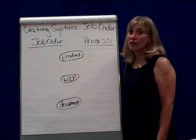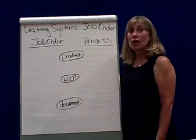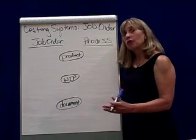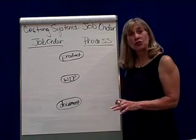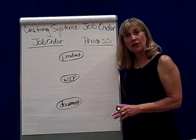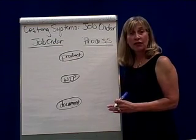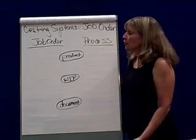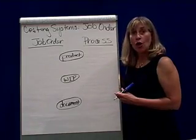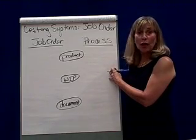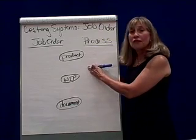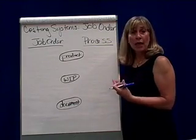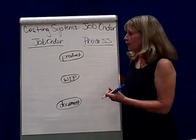Managerial Accounting Costing Systems. We're going to talk about job order costing, and first we're going to compare and contrast the two different types of costing systems you will learn about this semester. One is called job order costing, the other is called process costing. Both of them relate to how do we accumulate the cost to make a product or provide a service.